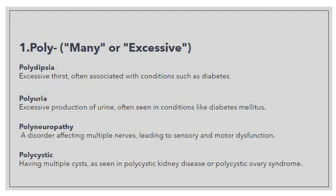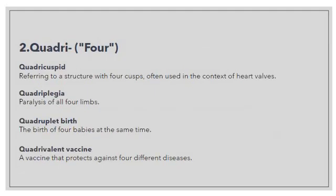Now let's move to the next slide. On the next slide we have another prefix: 'quadri'. We use 'quadri' mainly to convey the sense of four — if you are denoting four parts of the body, a disease, or anything where the quantity is four, then we will use the prefix 'quadri'. There are a couple of examples noted here which we will discuss one by one.